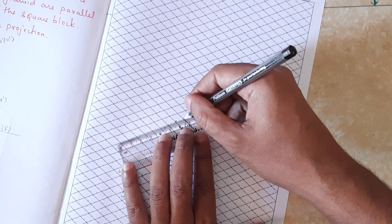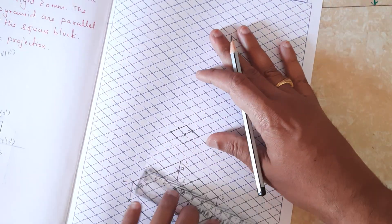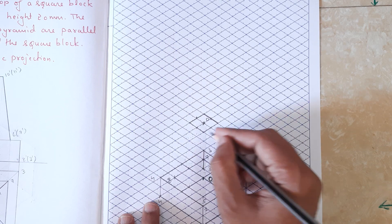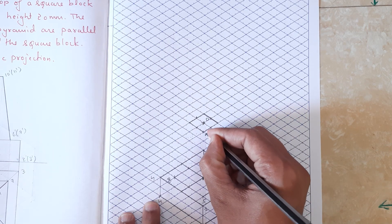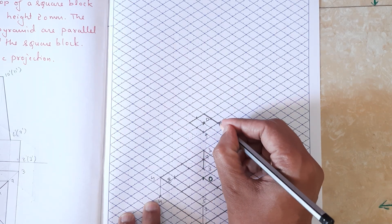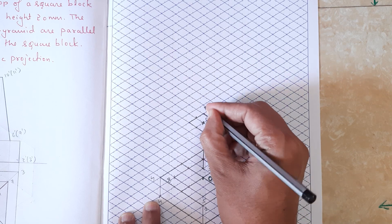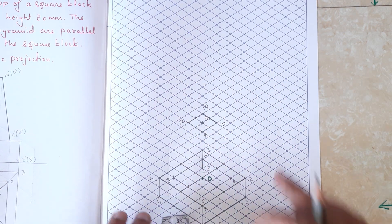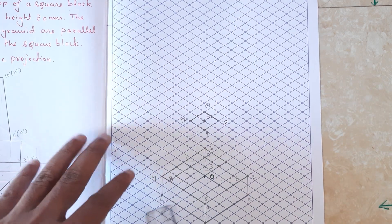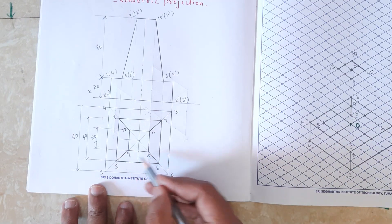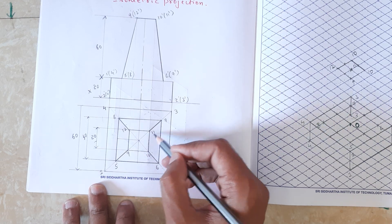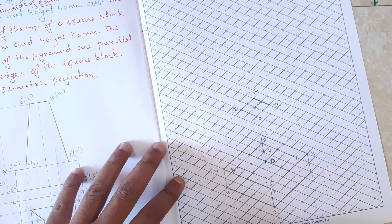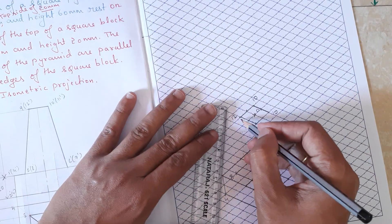Now I need to draw the corresponding slant edges. I name the top square corners as 9, 10, 11, and 12. We have slant edges from 5 to 9, 10 to 6, 11 to 7, and 12 to 8, so I am going to join all those points.